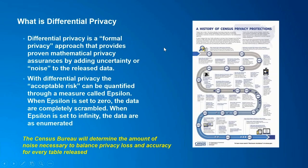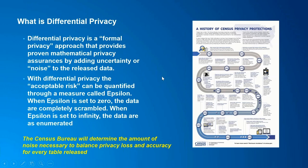This is to ensure that privacy is protected while also releasing high quality data. There were different methods used, such as data swapping and table suppression, and many of you are probably familiar with those. This round, when we start to look at differential privacy, we have to understand what that means. It is a formal privacy approach that provides mathematical privacy assurances by adding uncertainty or noise into the released data.